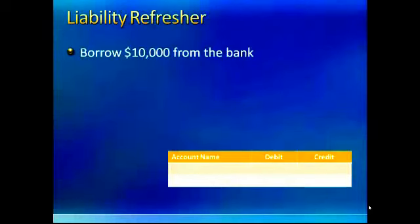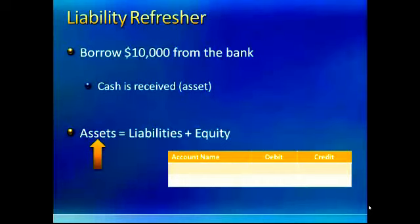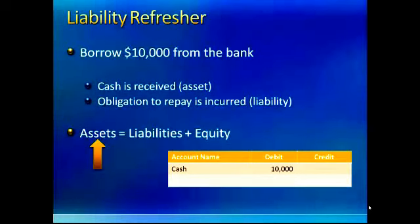As a refresher on liabilities, let's assume you decide to borrow $10,000 from the bank. The bank is external to the company, making them a creditor — not an owner. So in terms of assets, liabilities, and equity, this is going to affect assets and liabilities. Cash is received because you're borrowing $10,000, so your assets go up — that's a debit to cash of $10,000. You've also engaged in an obligation to repay this liability, which represents an increase in liabilities. When you increase a liability, you do so with a credit — so we credit notes payable.